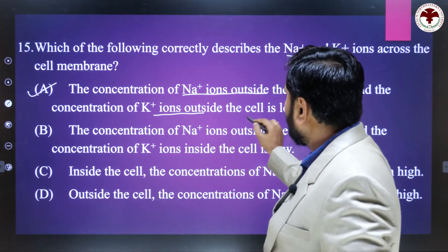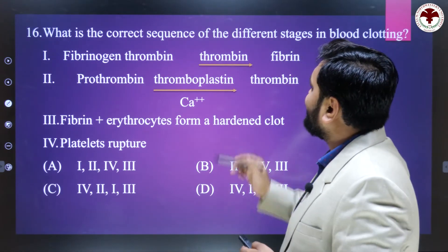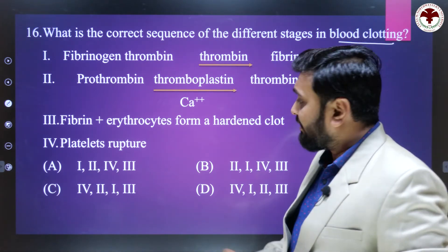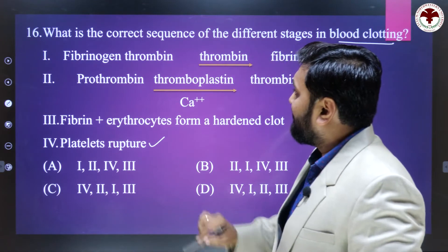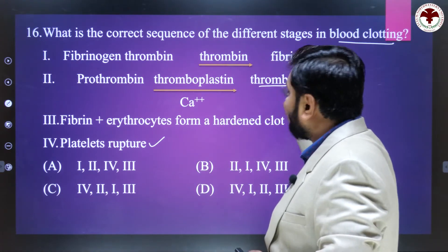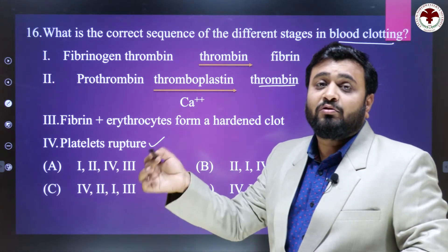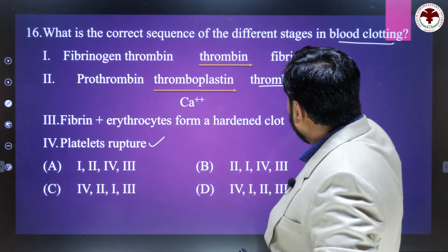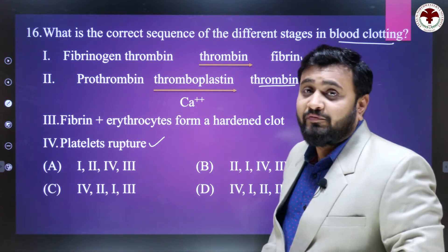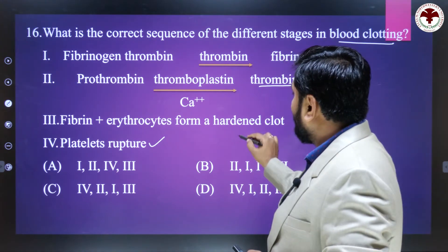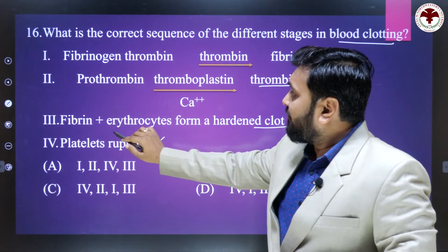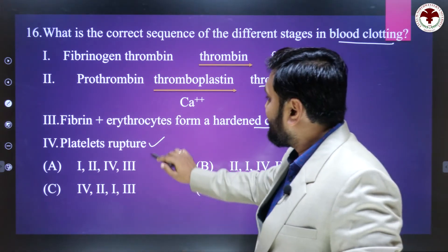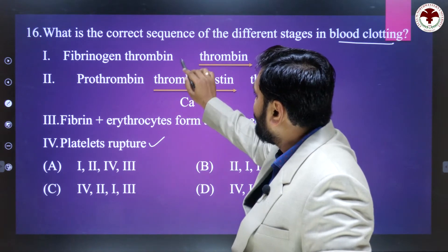What is the correct sequence of different stages in blood clotting? First occurs platelet rupture, then formation of thrombin — meaning conversion of prothrombin into thrombin. After thrombin formation, fibrin forms from fibrinogen, and lastly the clot forms from fibrin plus erythrocytes. So the correct sequence is 4, 2, 1, 3 — the right answer is C.